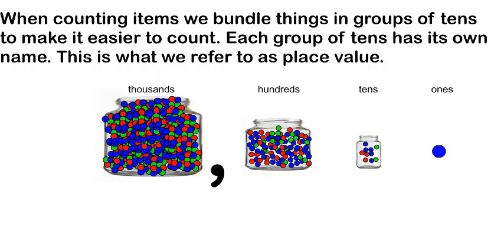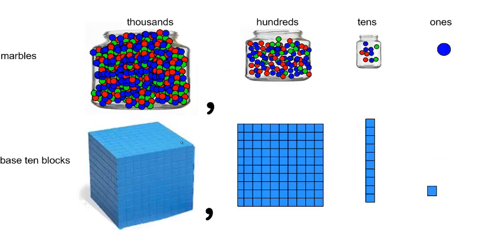When counting items, we bundle them in groups of 10s to make it easier to count. It's much easier. Each group of 10s has its own name. So this is what we refer to as place value. So when you're a 1, you're all by itself, we call you a 1. Well, once you get 10, you have to get into a new group, and now you are called the 10s. If you get 10 groups of 10, now you have to become a new group. Now you're a group of 100. If we get 100 jars of marbles, or 10 jars with 100 in them, it becomes a group of 1,000. Here's what the base 10 blocks look like. They're the same thing as the marbles up on top that we've been looking at. But here's the base 10. So here's a single one, here's a stick of 10, here's what 100 looks like, and continue to the left, there's a block of 1,000. Those are base 10 blocks.